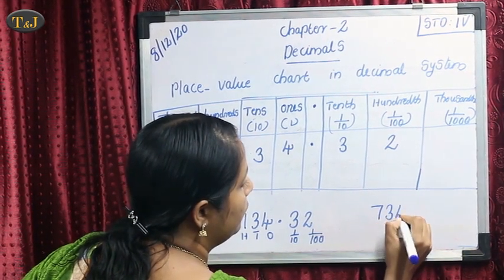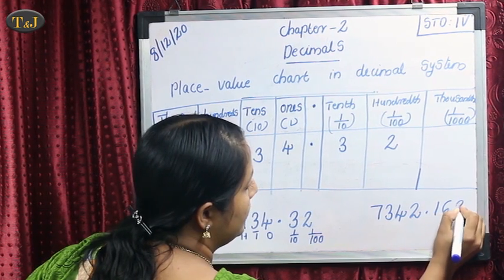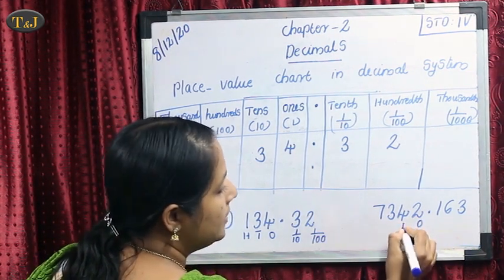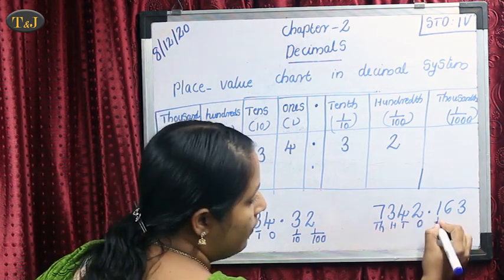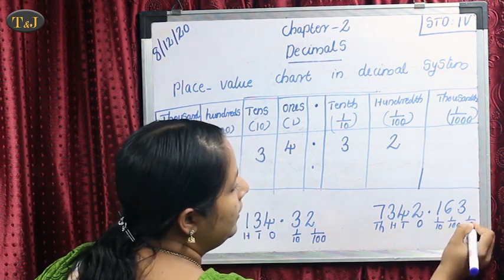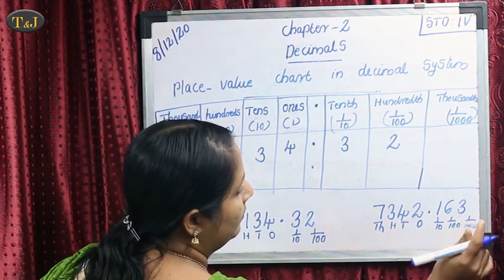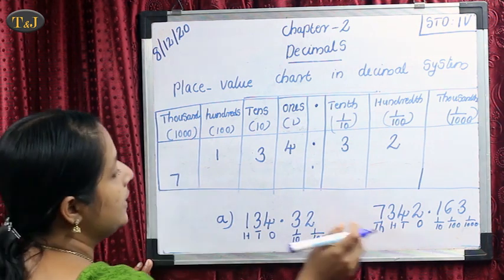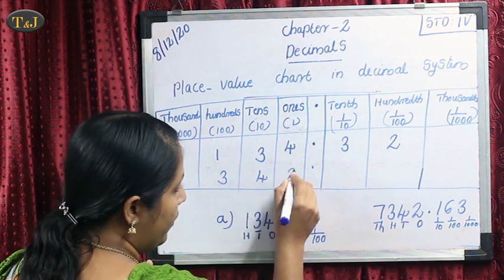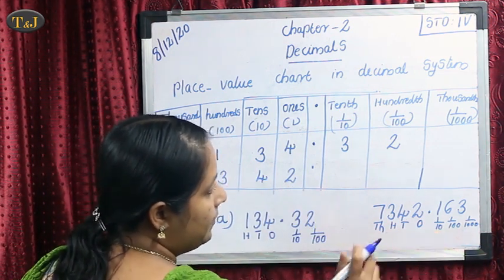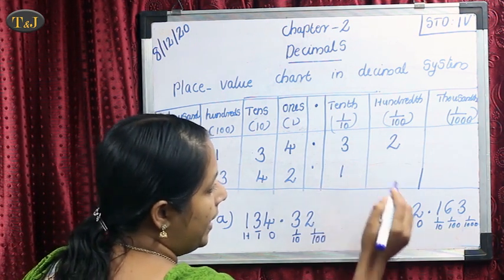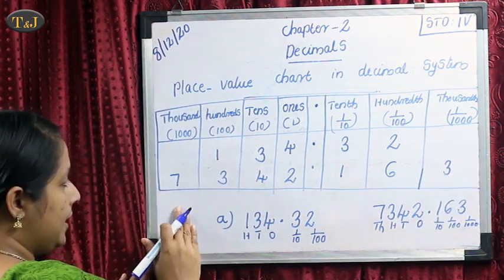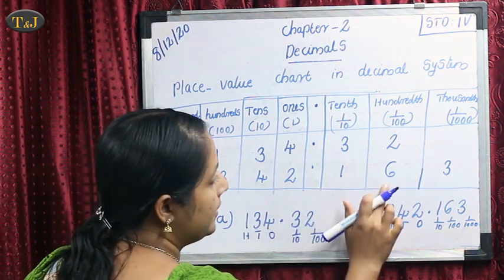Take the number 7342.163. Put the decimal point. Before the decimal point, place values are 1's, 10's, 100's, and 1000's. After the point, place values are 1 by 10, 1 by 100, then 1 by 1000. So: 7 in 1000's place, 3 in 100's place, 4 in 10's place, 2 in 1's place. Then: 1 in tenths, 6 in hundredths, 3 in thousandths. It is read as 7342.163.